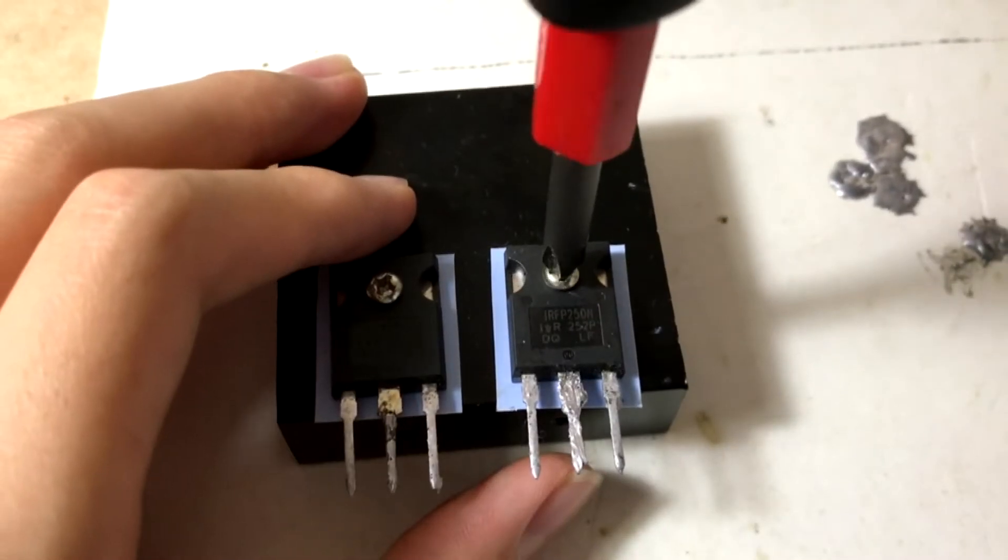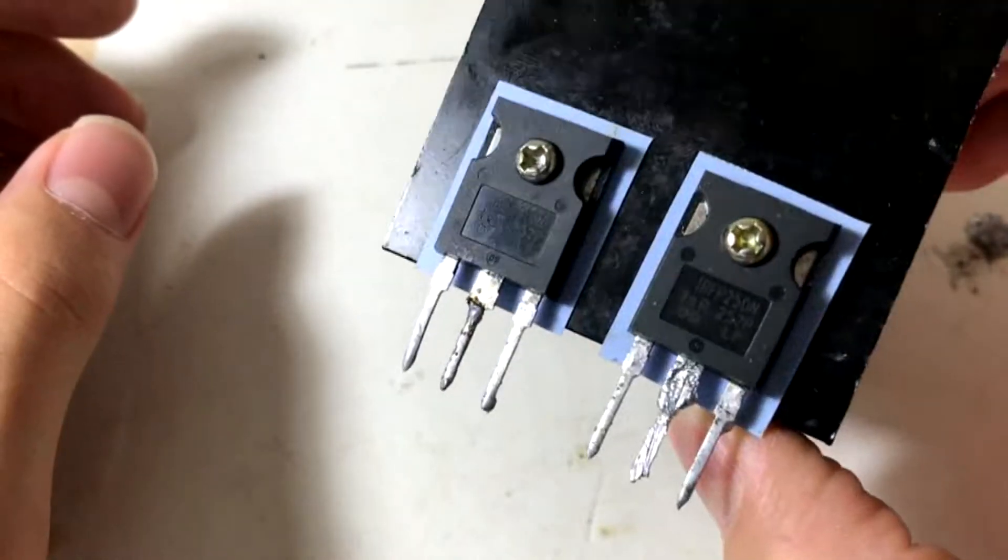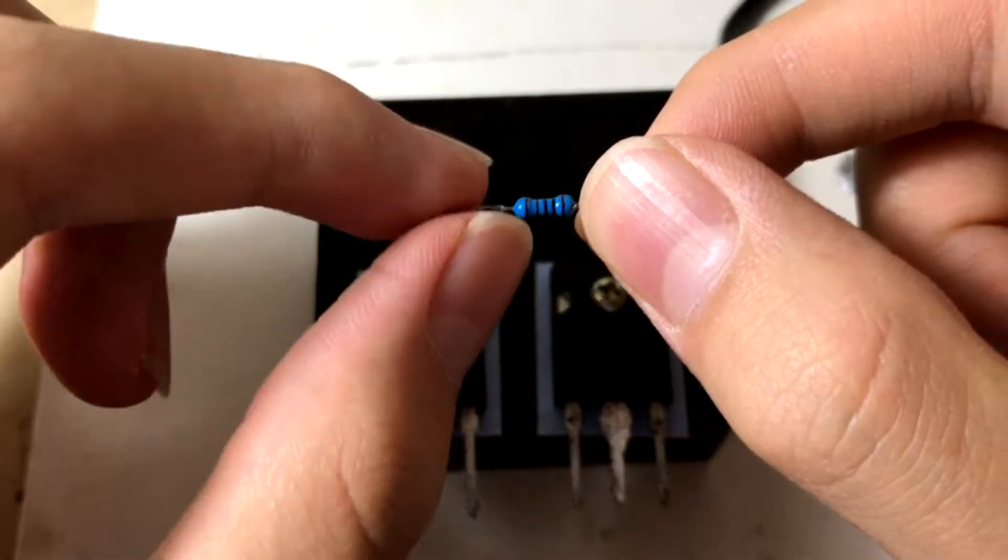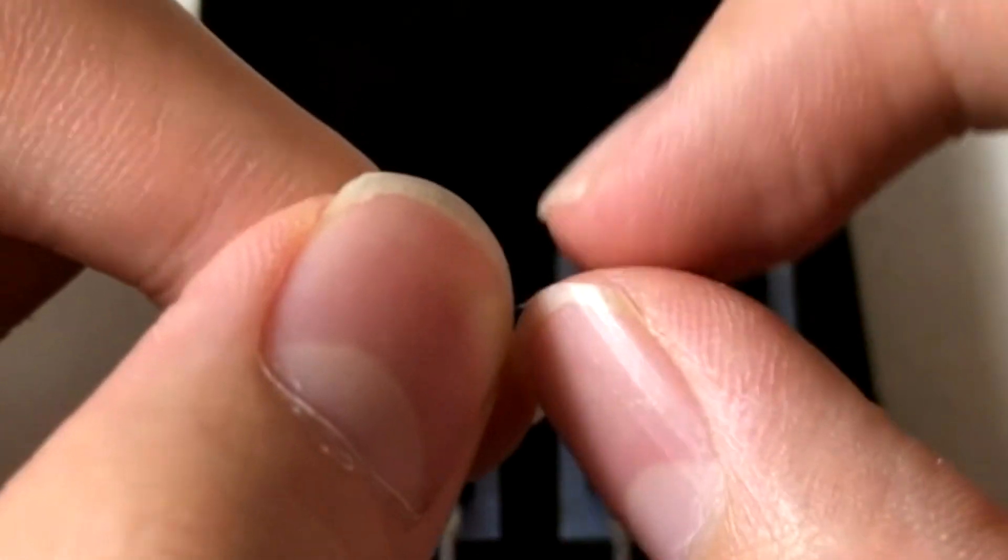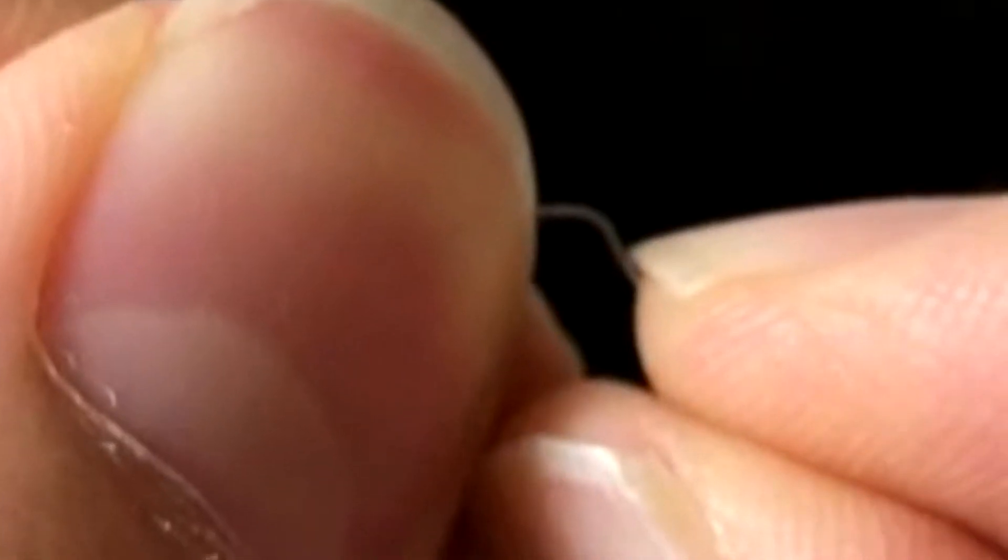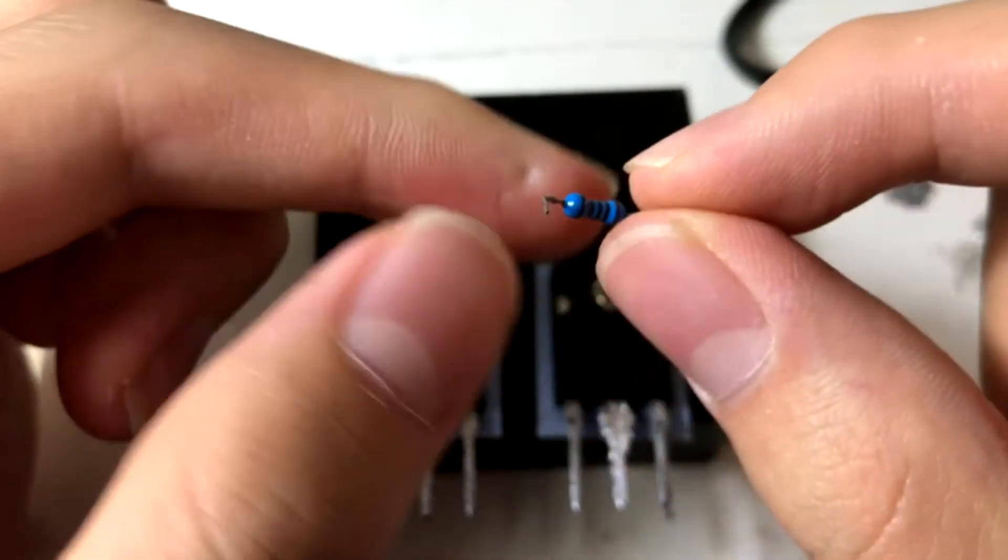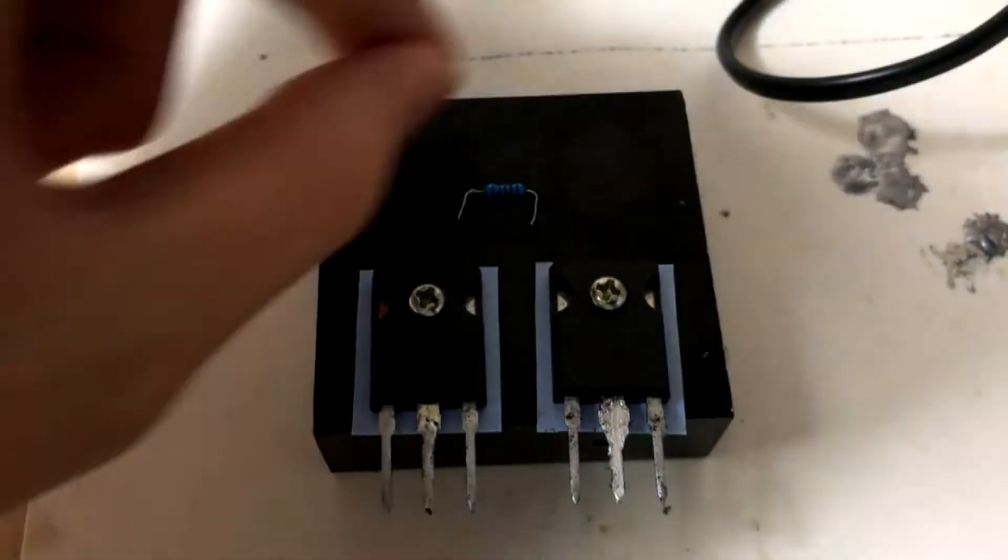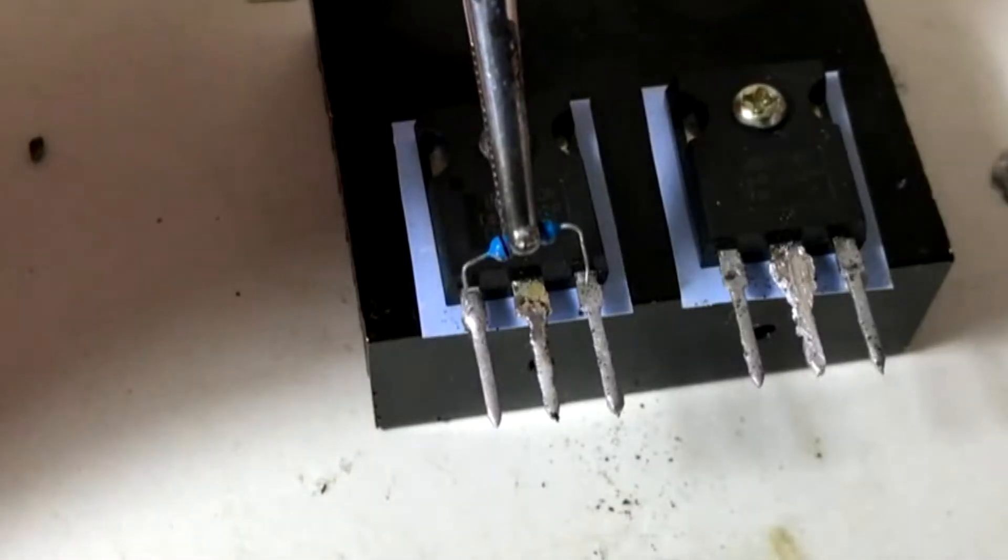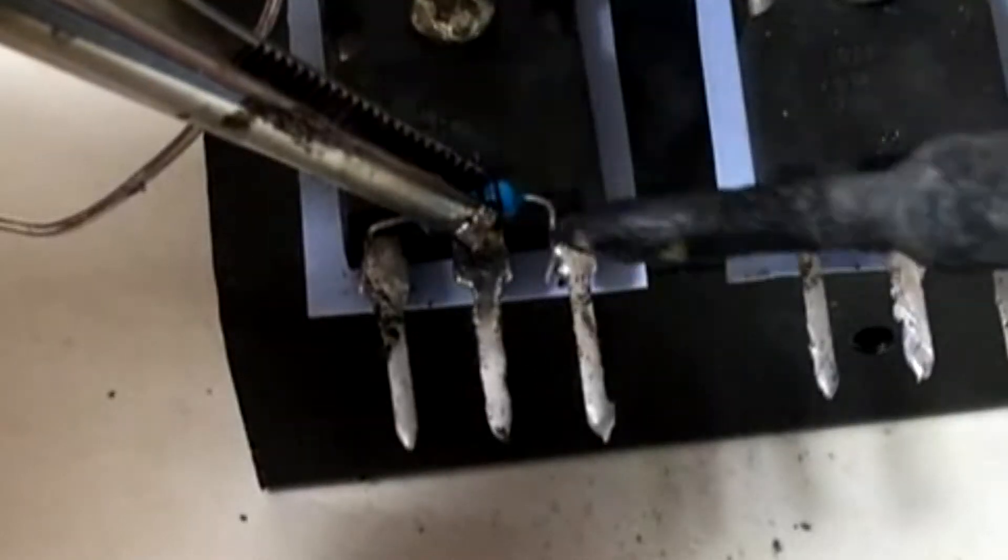Then you take out your 10 kilohm small resistor and bend the resistor's pin like this. Make two of them, then you solder them to the G and S pins of both MOSFETs.